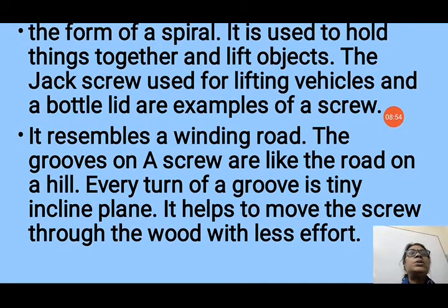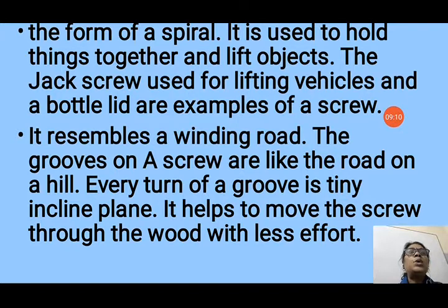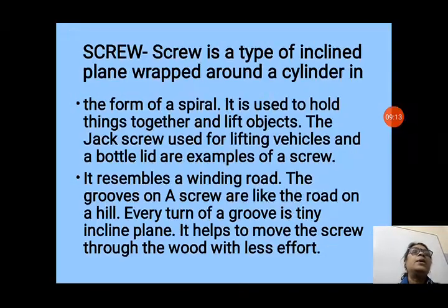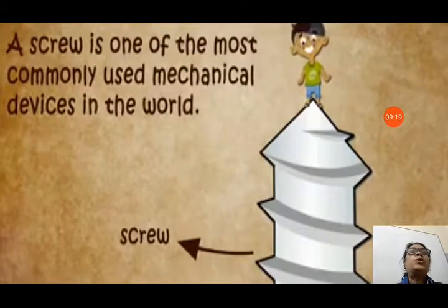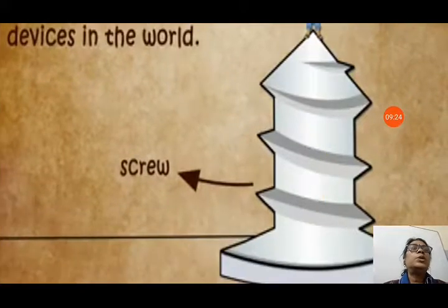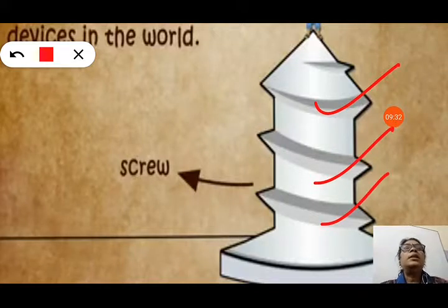A screw resembles a winding road — the grooves on a screw are like the road on a hill, winding around. Every turn of a groove is a tiny inclined plane. Because it is an inclined plane, it moves the screw through wood with less effort. You can see how the inclined planes are arranged along the screw.